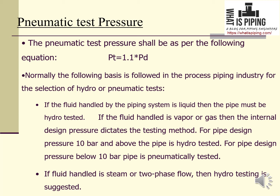If the fluid handled is vapor or gas, then the internal design pressure dictates the test method. For piping with a design pressure of 10 bar and above, the pipe is hydro tested; for design pressure below 10 bar, the pipe is pneumatically tested. If the fluid handled is steam or two-phase flow — where there is any possibility of liquid accumulation — hydrostatic testing is suggested.